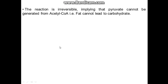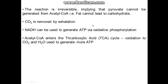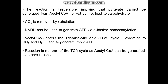The reaction is irreversible, meaning that pyruvate cannot be generated from acetyl-CoA — you cannot go from acetyl-CoA back to pyruvate. Acetyl-CoA can be produced many ways, not just glycolysis. One way is by beta oxidation of lipids, but you cannot reverse beta oxidation from acetyl-CoA back to glucose. The CO2 is removed by the bloodstream and exhaled. NADH is used to generate ATP via oxidative phosphorylation, which happens after the TCA cycle. Acetyl-CoA itself enters the TCA cycle and is oxidized to CO2 and H2O, used to generate more ATP.